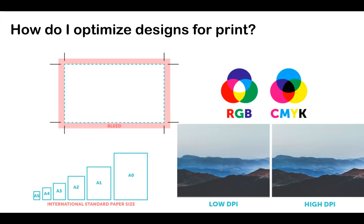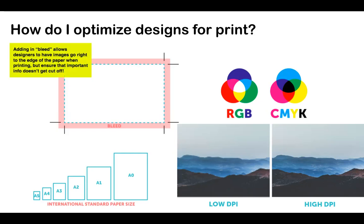How do we optimize designs for print? Adding bleed allows designers to have images go right to the edge of the paper when printing, but ensures that important info doesn't get cut off. When we make our design, I'm going to show you guys how to add a bleed and margins so that pictures go all the way to the edge without a white border.